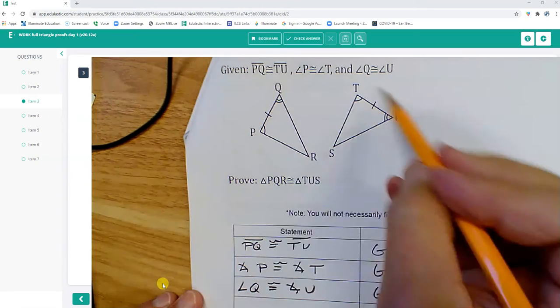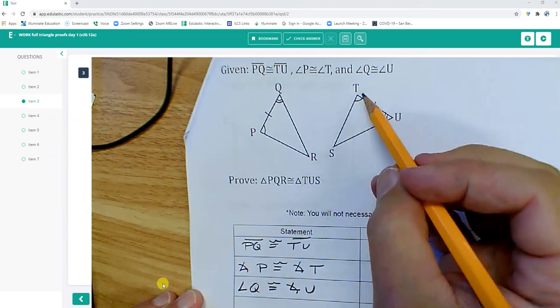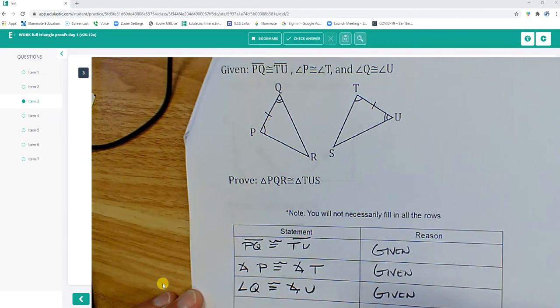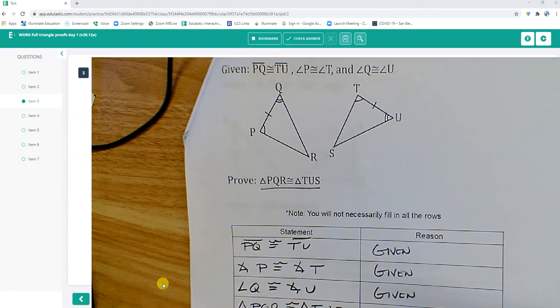And now notice the triangles are already marked up, so it's angle, side, angle. And that's what we're trying to prove. So triangle PQUR is congruent to angle TUS by angle, side, angle.